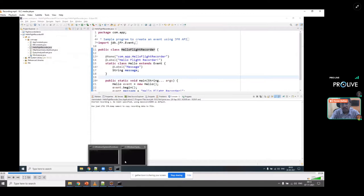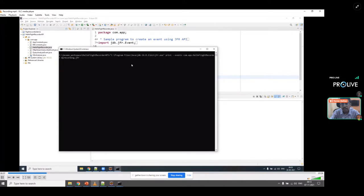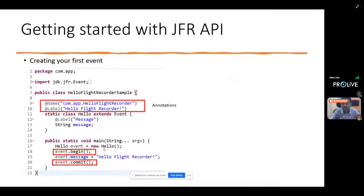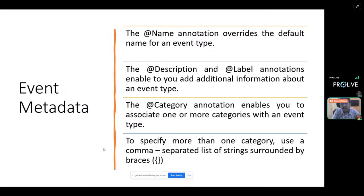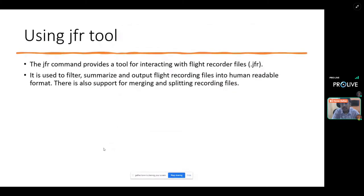The jfr command is used to print the contents of a recording file. This leads to event metadata — which comprises annotations, descriptions, and labels — to provide more data about events. You can also use a category annotation to divide or categorize your events. If you have more than one category, you can use a comma-separated list of strings.